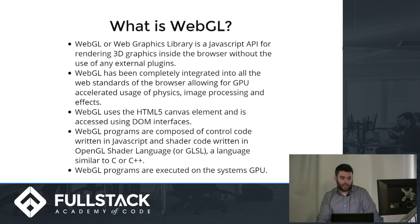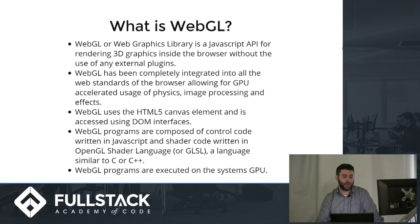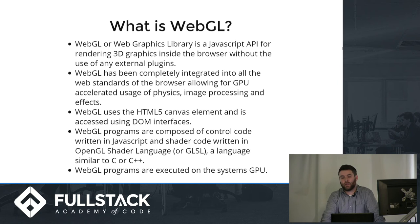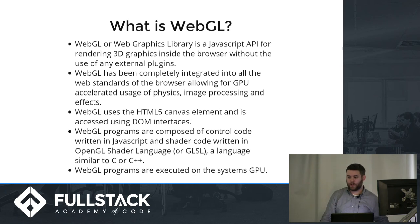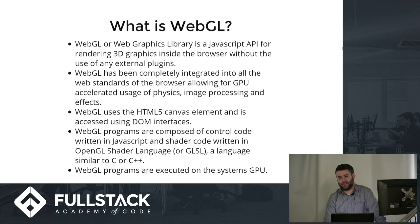WebGL uses the HTML5 canvas element and can be accessed using anything that can interface with the DOM. WebGL programs are composed of control code written in JavaScript, which is how you most often interact with it. However, for rendering and shading of objects, you can use a language similar to OpenGL's shader language — which WebGL is based on — written in a language similar to C and C++. WebGL programs are executed on the system's GPU.